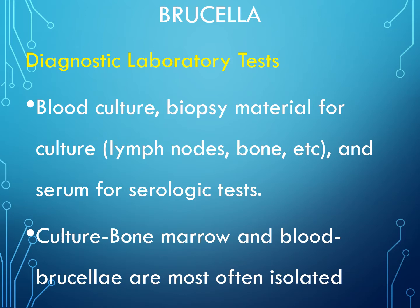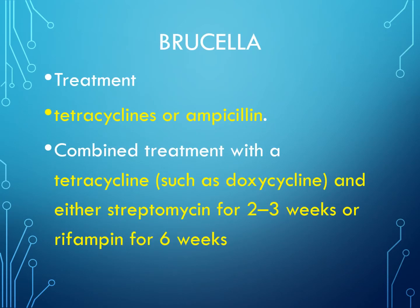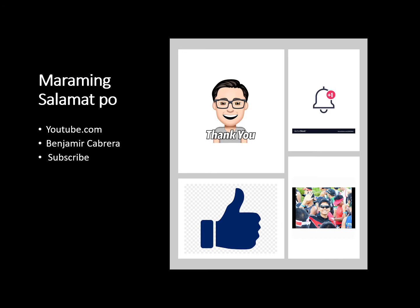Diagnosis is by blood culture, biopsy for culture from lymph nodes, spleen, and liver, and serum for serologic testing. Culture of bone marrow and blood usually isolates Brucella. Treatment involves tetracycline or ampicillin, or a combination of doxycycline with streptomycin for two to three weeks, or rifampicin for six weeks.